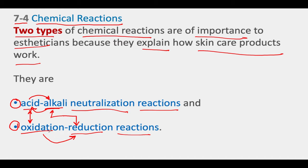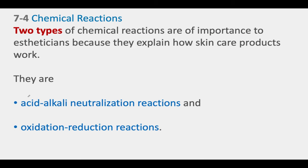Oxidation will either add oxygen, remove hydrogen, or remove an electron, and reduction will actually add an electron into the system. So they kind of work as a balancing system. Think about both of these things as a balance — acid versus alkali, and oxidation against reduction. We'll see more examples of this balancing act.